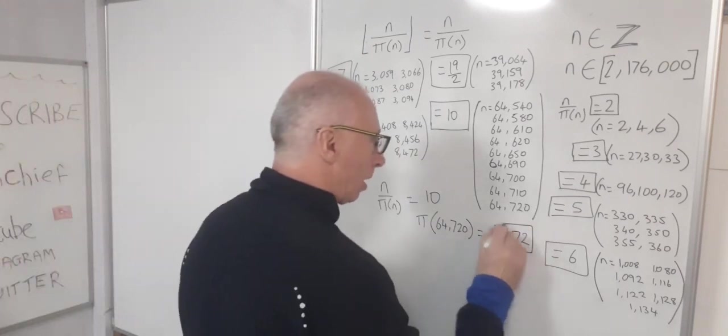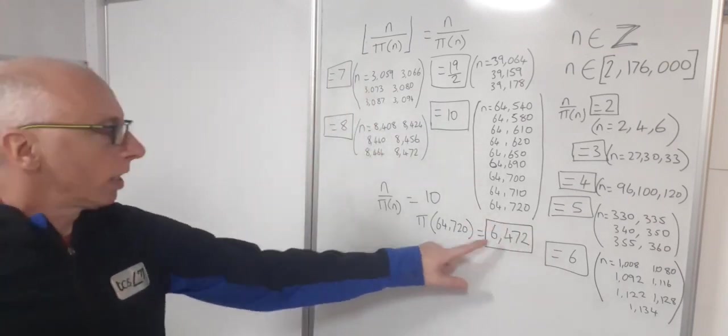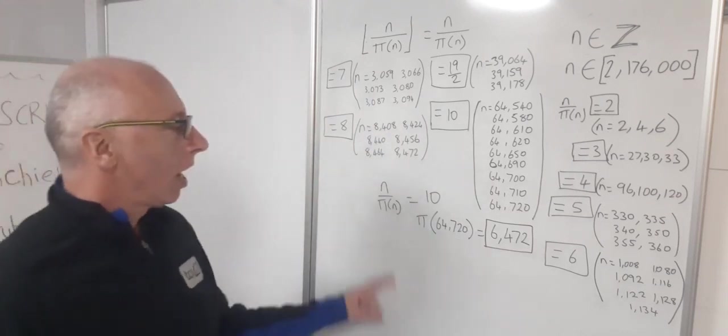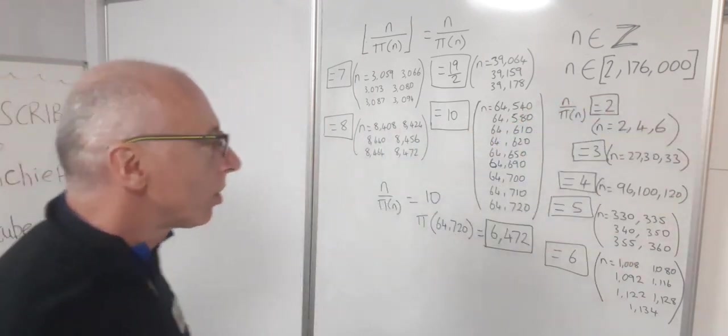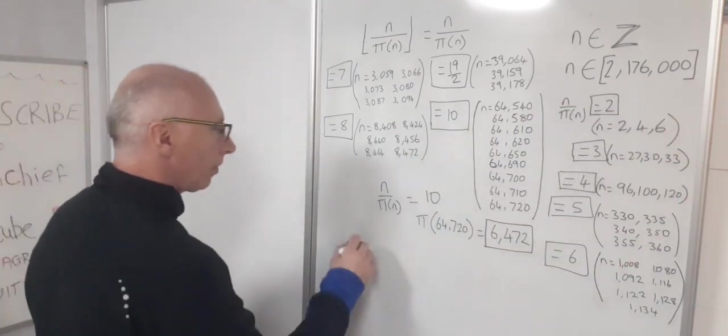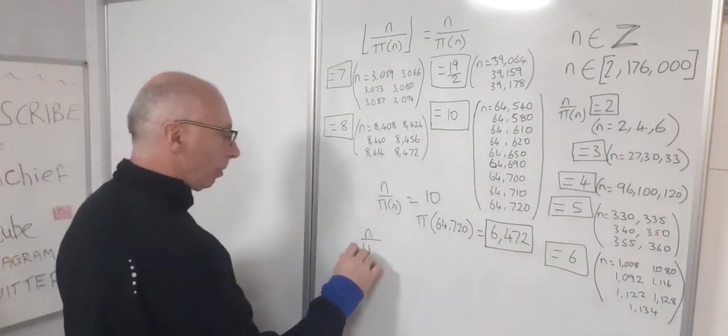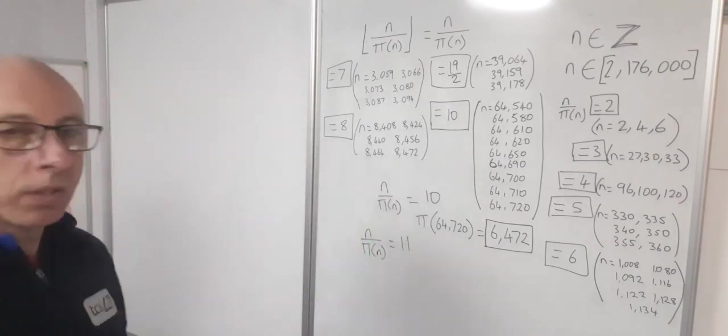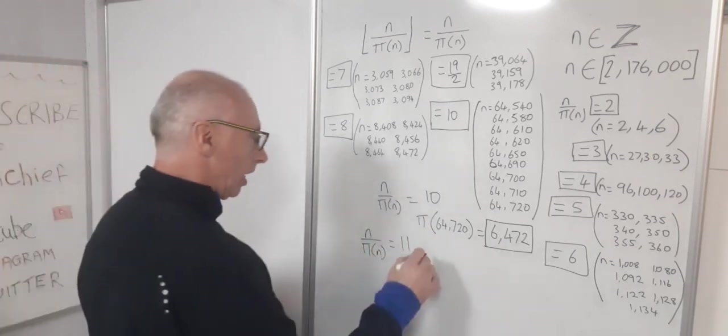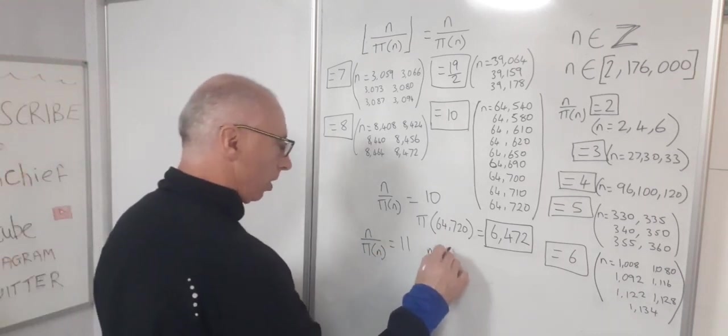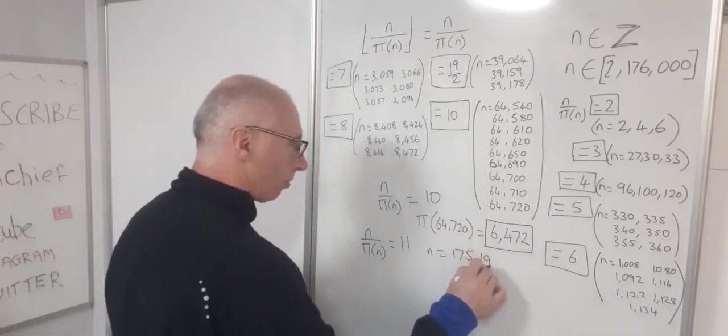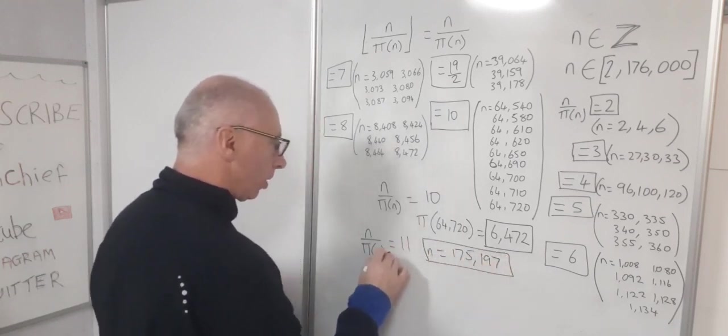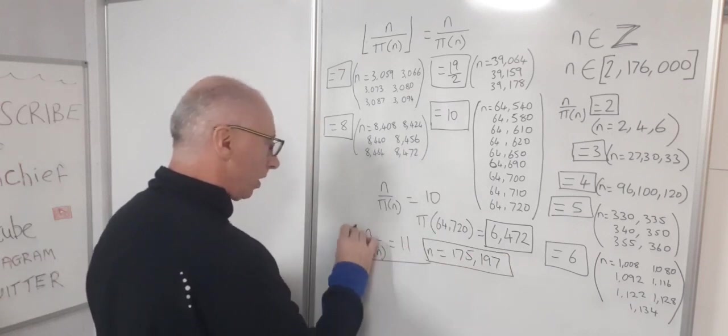And then after that I went all the way through up to 176,000. And to find n over pi of n to equal 11 exactly, I could only find one solution. And that is when n equals 175,197. So that was my only solution to get this to equal 11.